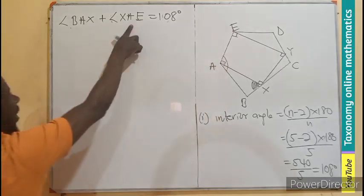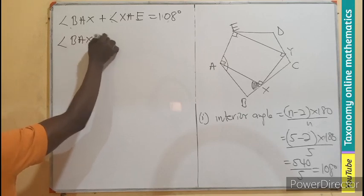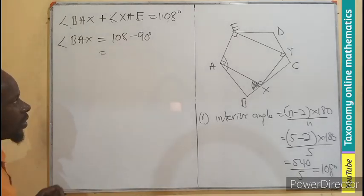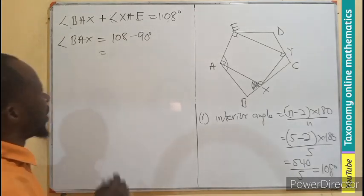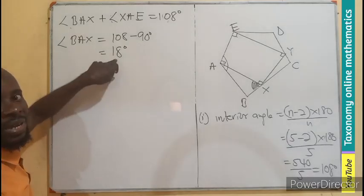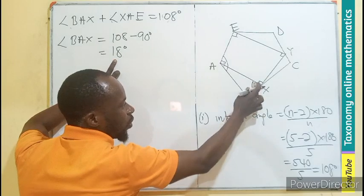This angle plus this angle will give you 108. So we can find this, knowing that this angle is 90. So the angle BAX equals to 108 minus 90 degrees. And that is going to be 18 degrees. So this is 18 degrees at this. This is 18. This is 90. We are looking for that.